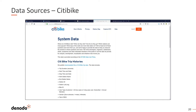Luckily, CitiBike provides very detailed, unpersonalized data about bike utilization — every single trip is saved and exposed on their website. The data includes trip duration in seconds, start time, end time, start station, end station, station ID, bike ID, user type, gender of the rider, and year of birth. I downloaded the files containing all this data, and started thinking about what other information would be valuable for my predictive analytics — specifically to predict the number of rides from a certain station for the next year.